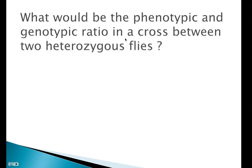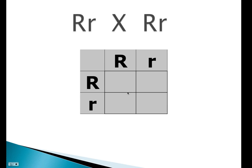One more quick one. What would be the phenotypic and genotypic ratio in a cross between two heterozygous flies? And so we're talking about big R, little r crossed with big R, little r. Set up our Punnett square here with big R, little r, big R, little r. When we fill it in, bring one down and one over, those are the results you get.